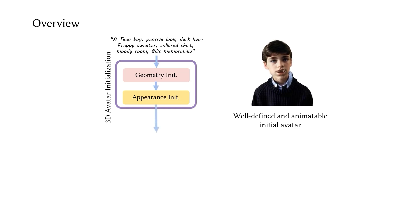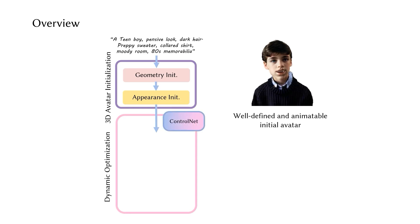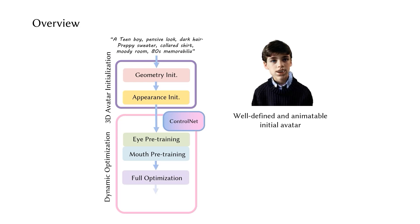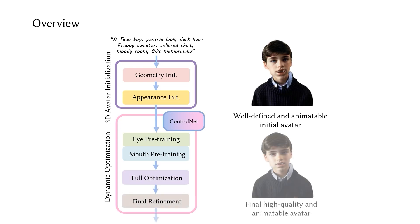In the dynamic optimization stage, we utilize a ControlNet to ensure precise alignment with the underlying parametric model. We first pre-train the eye and mouth regions, then optimize the full avatar, and finally apply a refinement strategy to produce the final result.